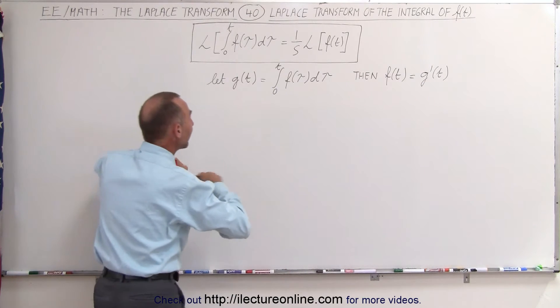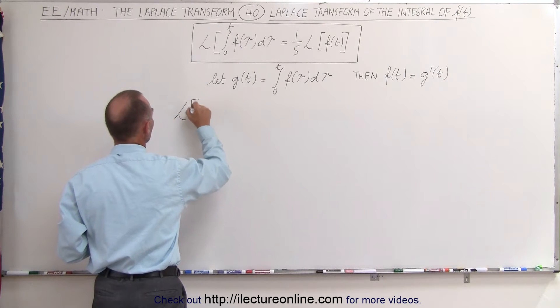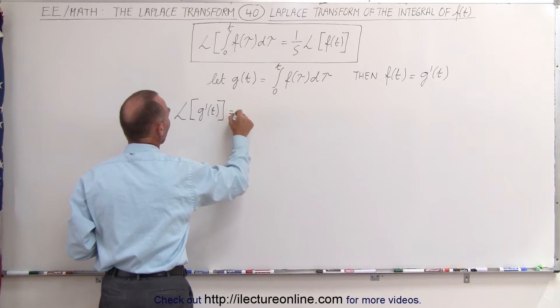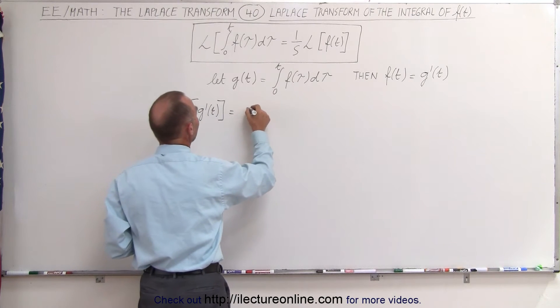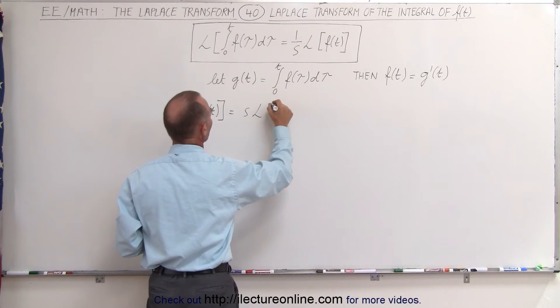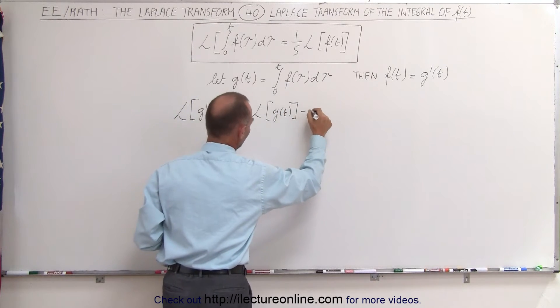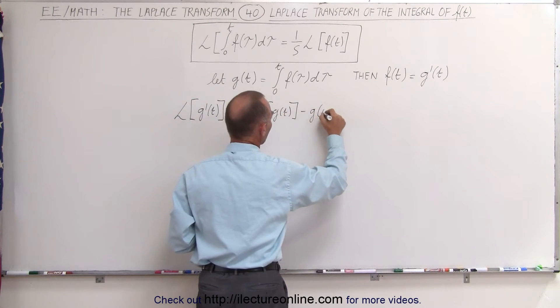If we now take the Laplace transform of g'(t), we know how to do that. It equals s times the Laplace transform of g(t) minus the function evaluated at zero.